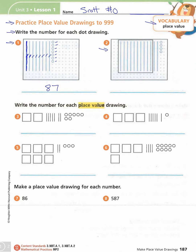Number two looks a little different. We have four single dots. But they've put a black square around a bunch of our ten-sticks. Let's count the ten-sticks inside: 1, 2, 3, 4, 5, 6, 7, 8, 9, 10 — ten ten-sticks, which is worth one hundred. Then we have two ten-sticks and four ones, so the number is 124.